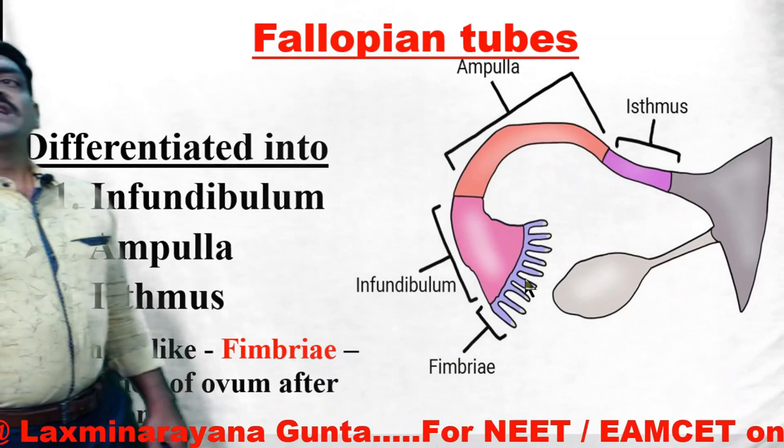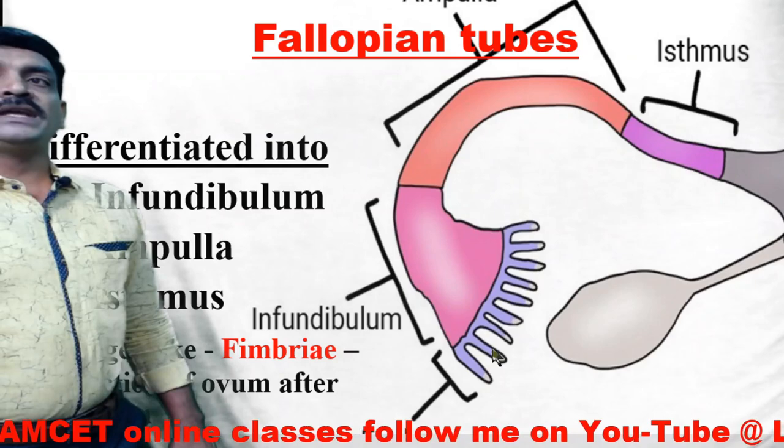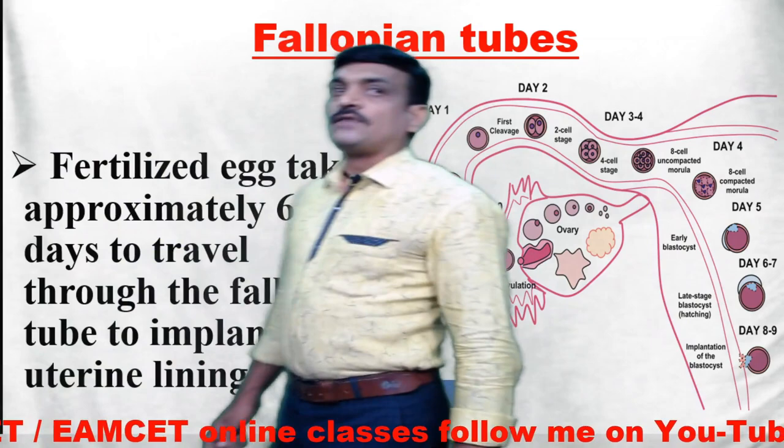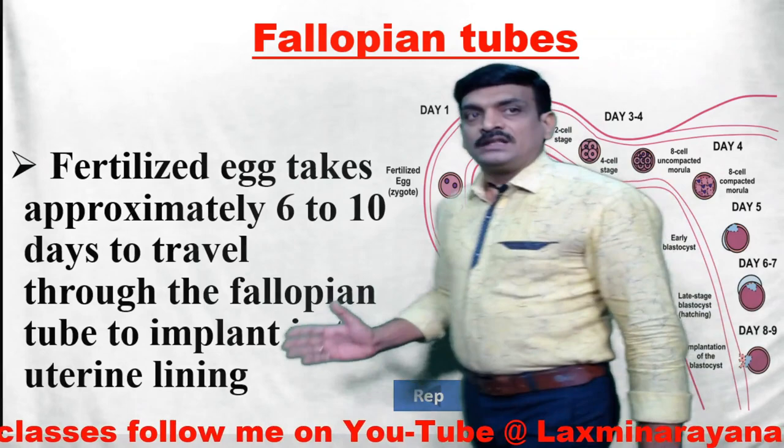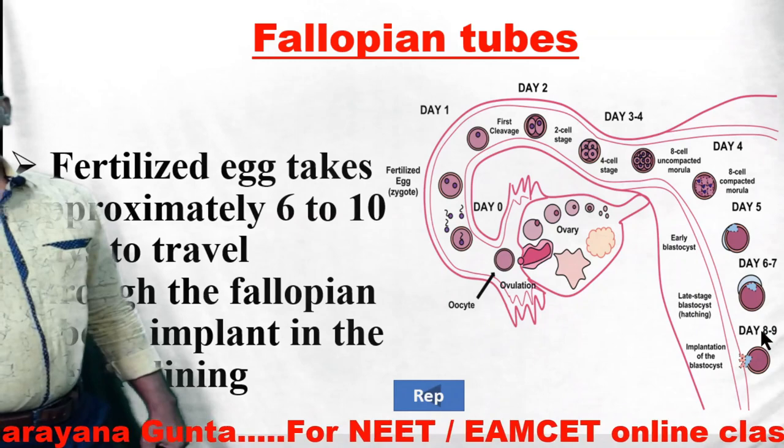The fimbriae are essential for collecting the ovum after ovulation. You can clearly observe these finger-like projections collecting the eggs released from the ovary. The fertilized egg takes approximately six to ten days to travel through the fallopian tube and implant into the uterine lining — by the seventh day the fertilized egg attaches to the uterus.